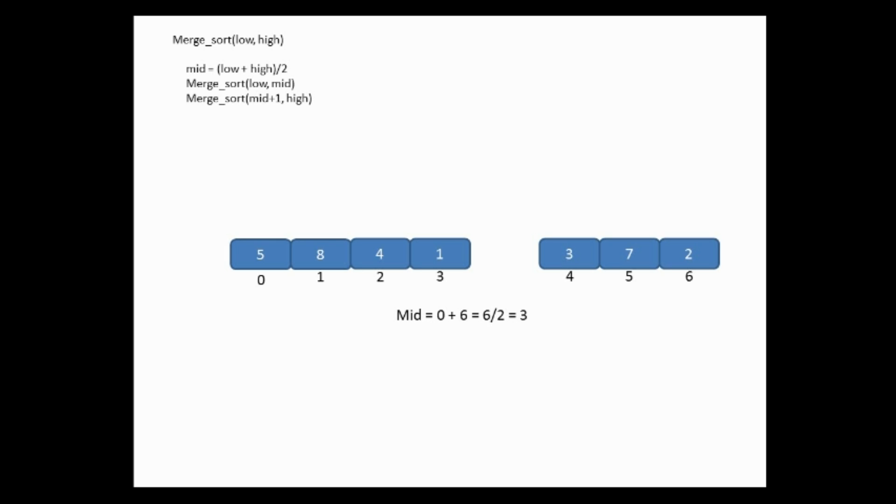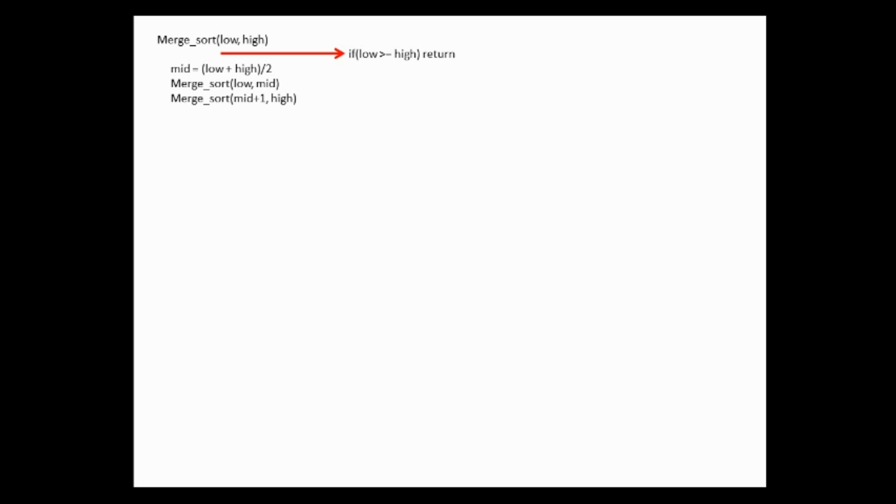We call merge sort recursively on both sublists: merge sort with low to mid for the first half, and merge sort with mid plus one to high for the second half. Since this is a recursive function — one that calls itself from its body — we need an exit condition to avoid an endless loop. The exit condition is: if low is greater than or equal to high, the function returns. This means only one element is left, so we don't divide further.